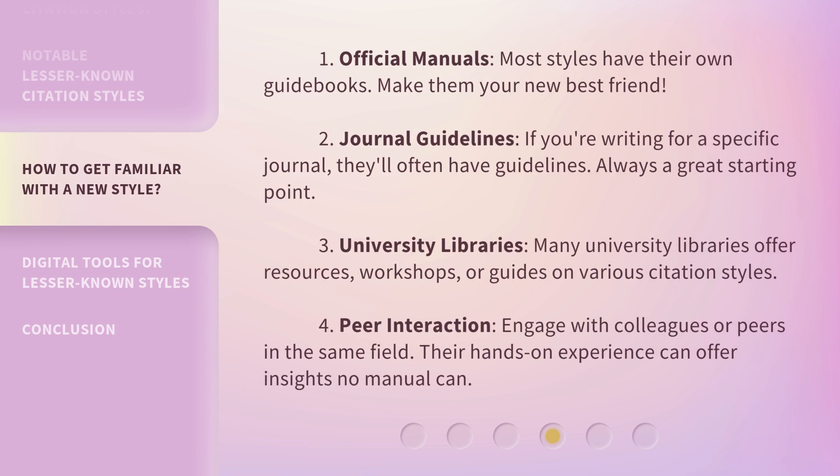One, official manuals — most styles have their own guidebooks, make them your new best friend. Two, journal guidelines — if you're writing for a specific journal, they'll often have guidelines, always a great starting point. Three, university libraries — many university libraries offer resources, workshops, or guides on various citation styles. Four, peer interaction — engage with colleagues or peers in the same field; their hands-on experience can offer insights no manual can.